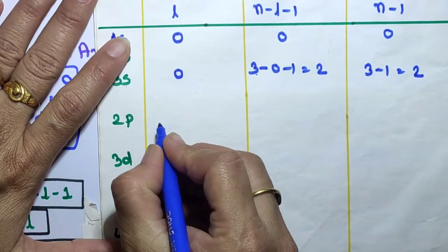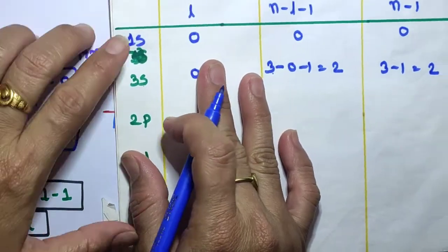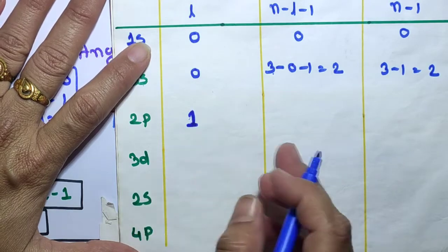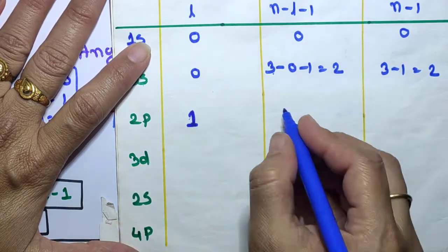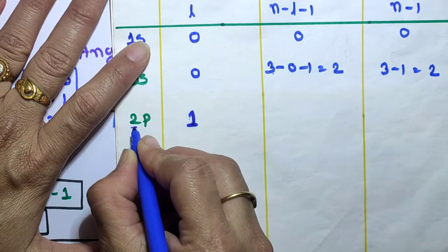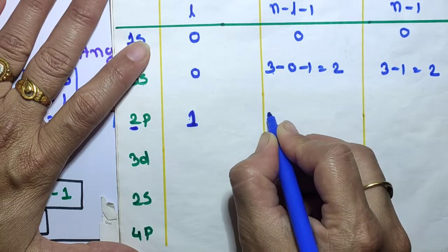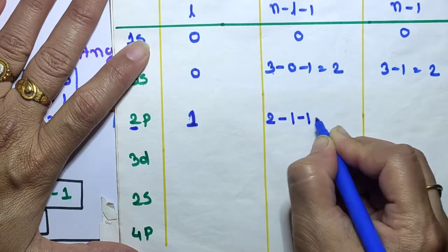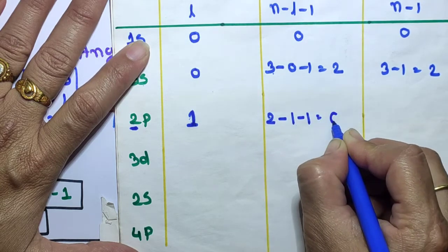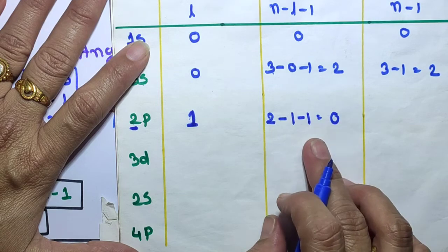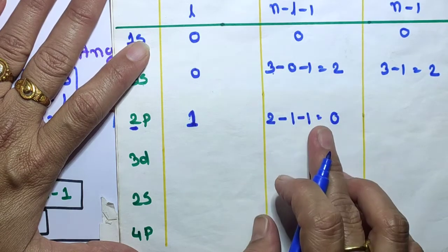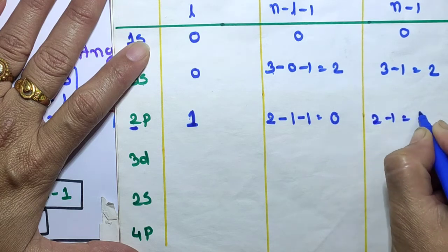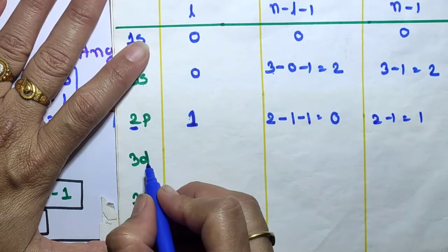Now, the 2p orbital. For p orbitals, L = 1, so angular nodes = 1. Radial nodes = n − L − 1 = 2 − 1 − 1 = 0, so the 2p orbital contains 0 radial nodes. Total number of nodes = n − 1 = 2 − 1 = 1.